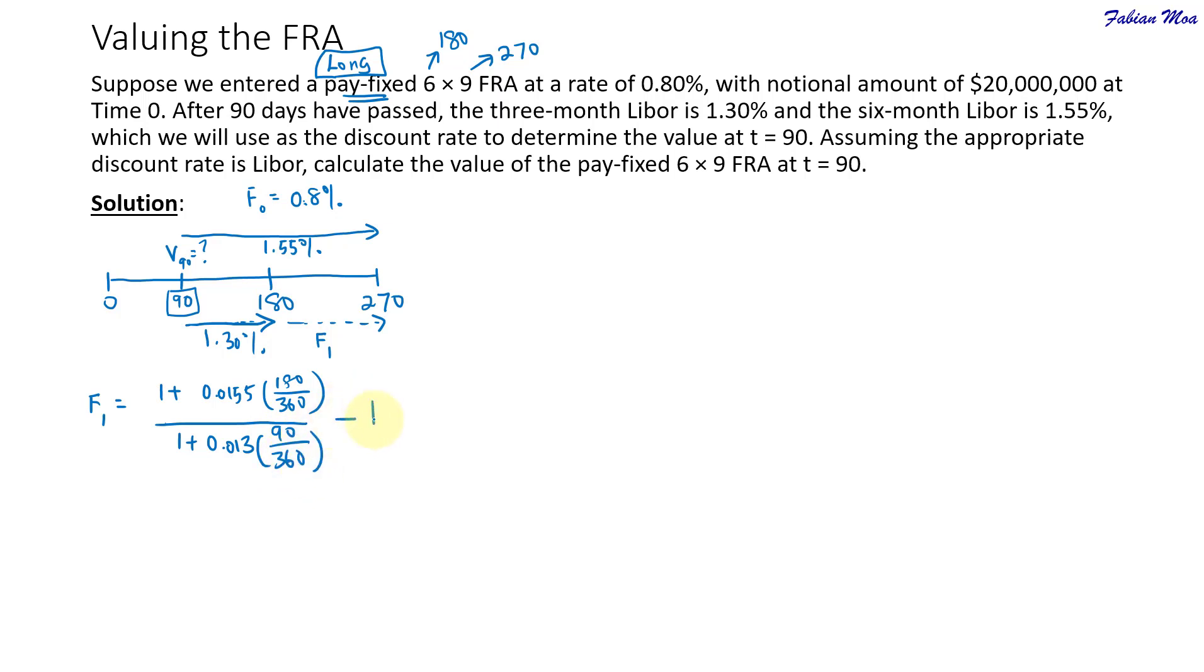If you calculate this, you will get about 1.79%. So based on the six-month and three-month LIBOR on day 90, we find that the FRA rate, the three-month FRA rate, has increased from 0.8% to 1.79%.